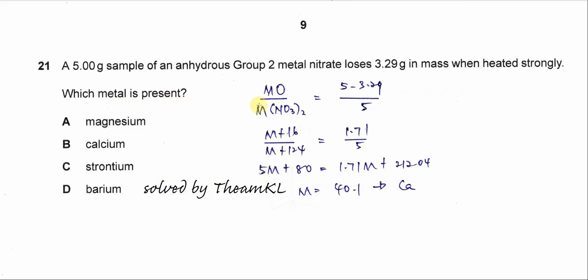So this one we should use the ratio between the metal oxide and the metal nitrate. So we just put the M as the metal we want to find.